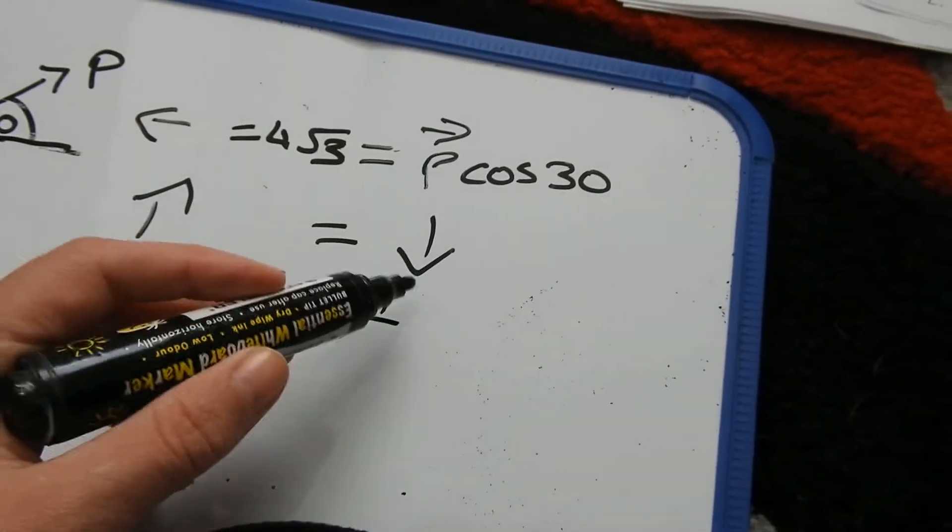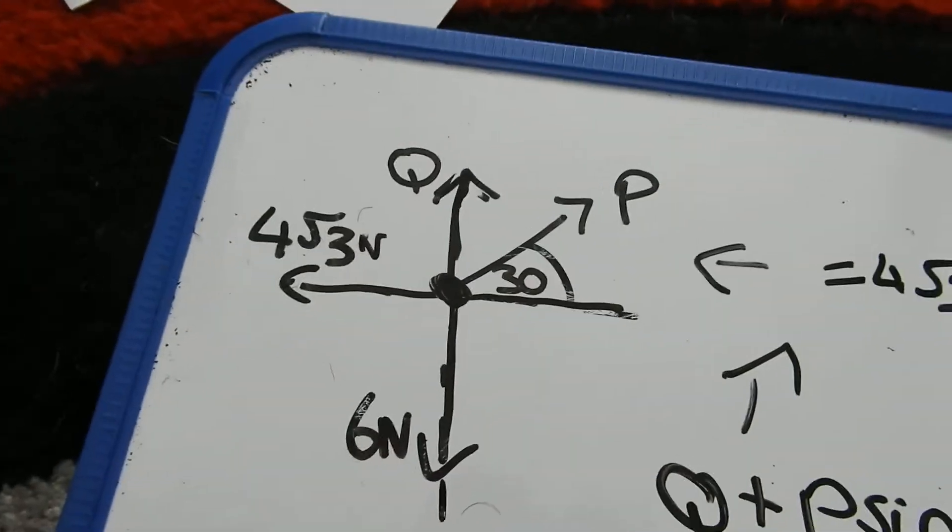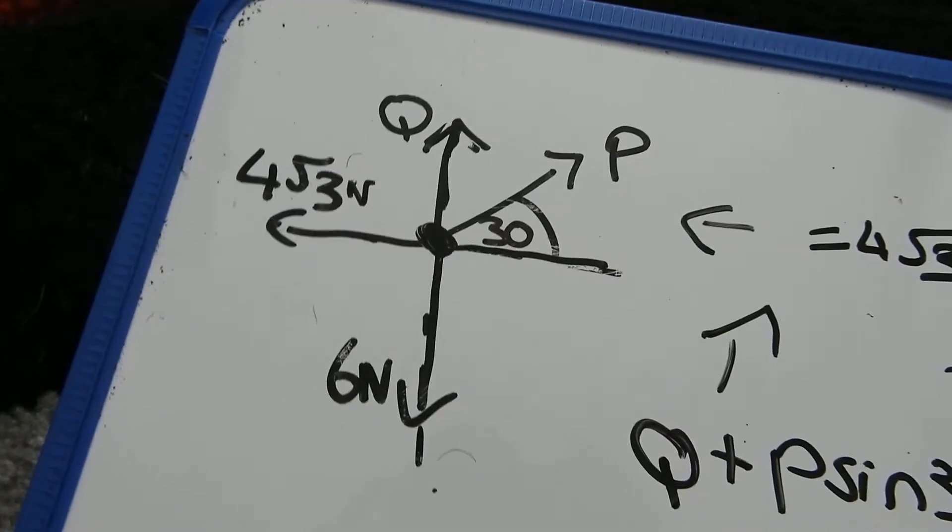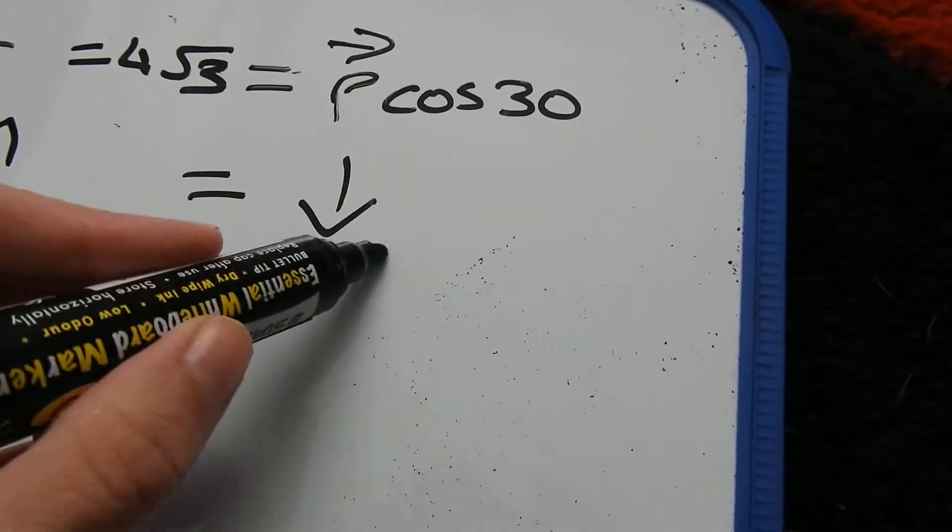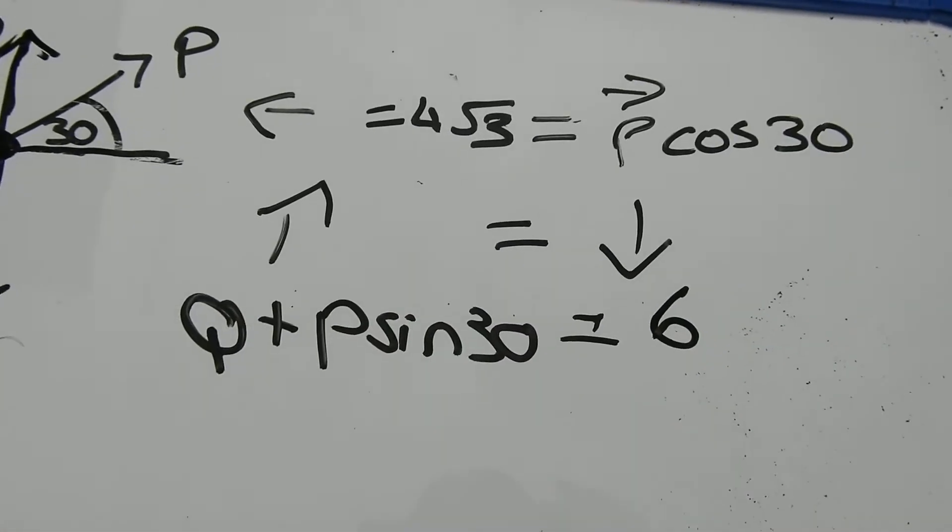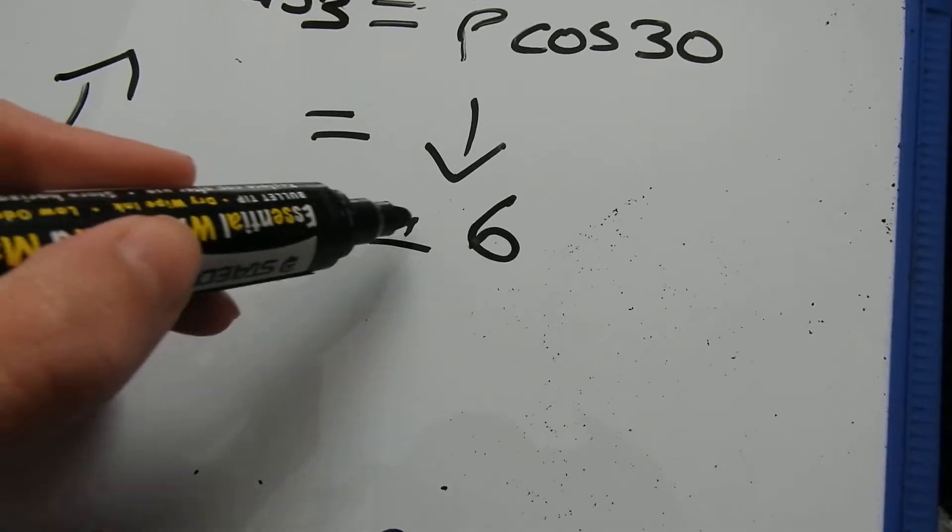So then I'm going to have to equal to what is going down. And in this diagram, the only thing that is going down is my six newtons.